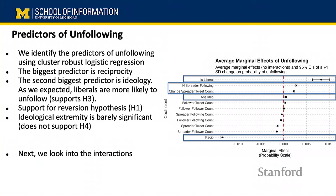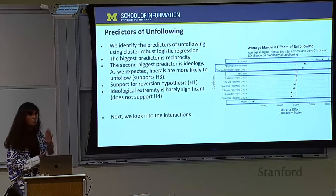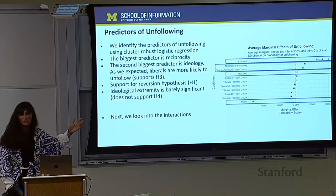An audience member noted the marginal effects are on a probability scale, not odds ratios, and that with base rates of 0.03–0.04 the effect is proportionally large — going from about 0.3 down to 0.1. Another question asked whether reciprocity effect varies by how many people the spreader is following. We only looked at edge-level reciprocity. We had ideas around more complex network features like closed triads but haven't implemented those yet. Another question asked about account banning versus unfollowing — we confirmed we checked that accounts existed at both time points to avoid conflating banning with unfollowing.